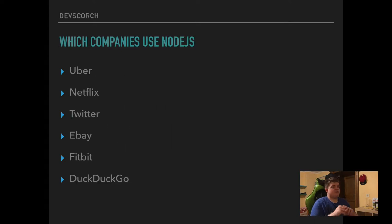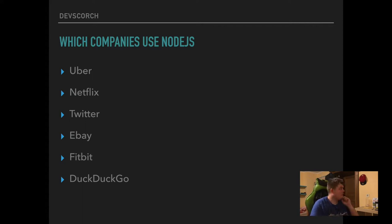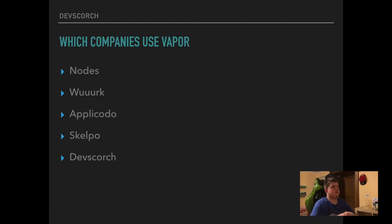Which companies use Node.js? Uber, Netflix, Twitter, eBay, Fitbit, and DuckDuckGo all use Node.js as their backend. Some companies like Applicado, Scalpo, and of course Devcords use Vapor. These companies are not really well-known yet, but they all use Vapor for the same reason we do — it's easy, it's lightweight, and it's high performance.